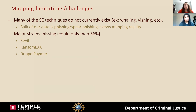We did experience some challenges and found some limitations with mapping our data set onto the ATT&CK framework. In the social engineering data set, many of the social engineering tactics do not currently exist in the framework, such as whaling and vishing. While our mapping results showed that about half of the tactics mapped over, the bulk of our incidents are phishing and spear phishing attacks, which the framework does include — that raised our percentage. We had very few techniques besides phishing that mapped onto the framework. In the ransomware data set, we were unable to map a portion of the strains. Some strains that appear frequently, such as REvil, which has been around for some time, do not yet exist in the framework. Other newer strains such as RansomX are also not yet in the framework.